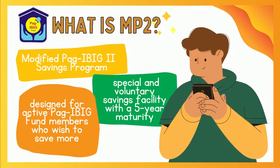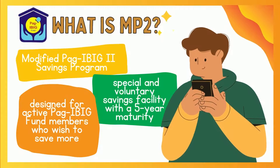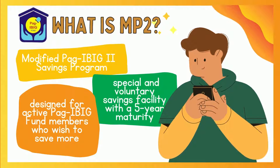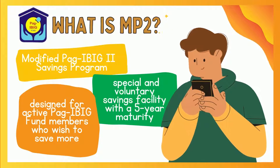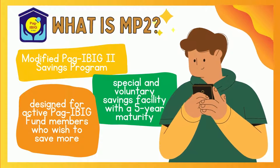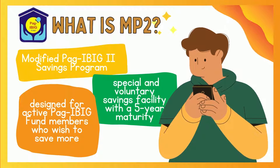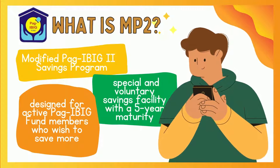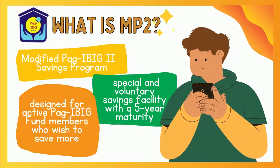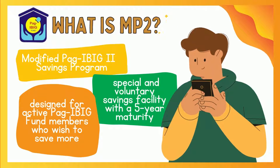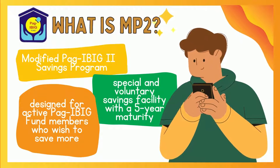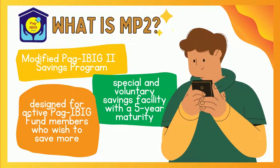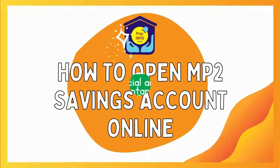Just an overview: MP2 refers to Modified Pag-Ibig 2 Savings Program. It is a special and voluntary savings facility with a 5-year maturity. This program is designed for active Pag-Ibig Fund members who wish to save more and earn even higher dividends, in addition to their Pag-Ibig Regular Savings.